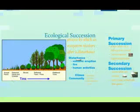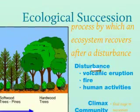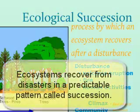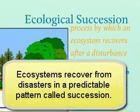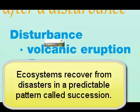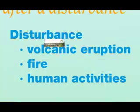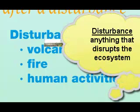We'll start with the obvious question: what is ecological succession? Ecological succession is the process that an ecosystem goes through to recover after a disturbance. Whenever something disturbs an ecosystem, usually killing off some of the plants and animals, there's a set process it will go through in order to recover and go back to normal. An ecological disturbance is anything that disrupts the normal functioning of the ecosystem.